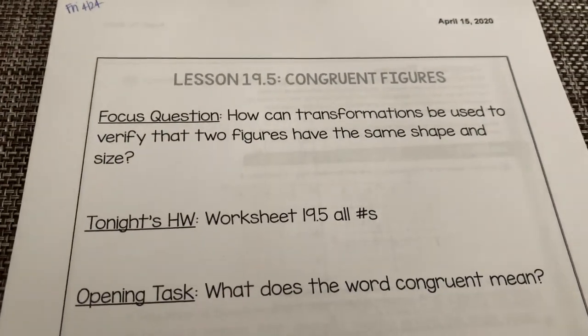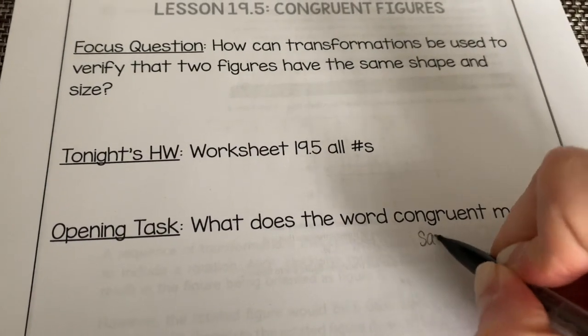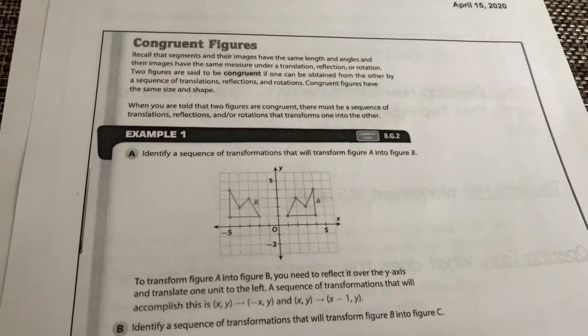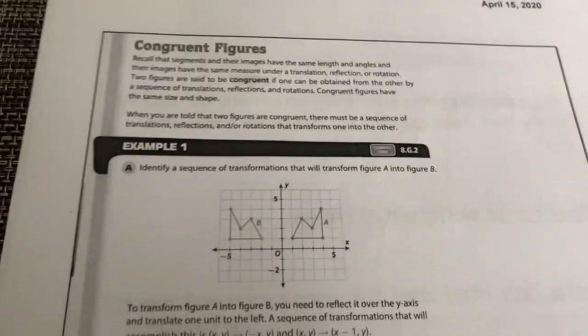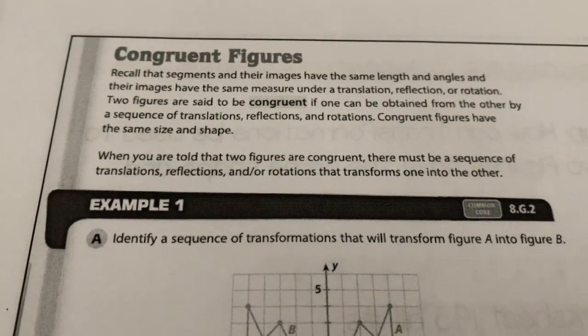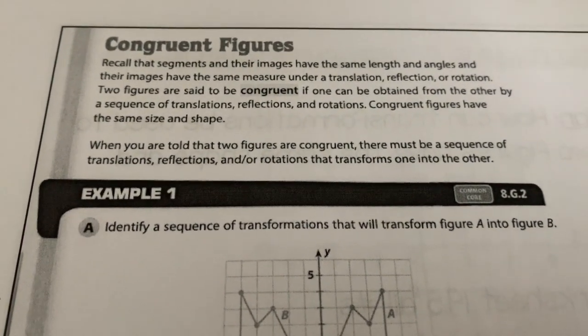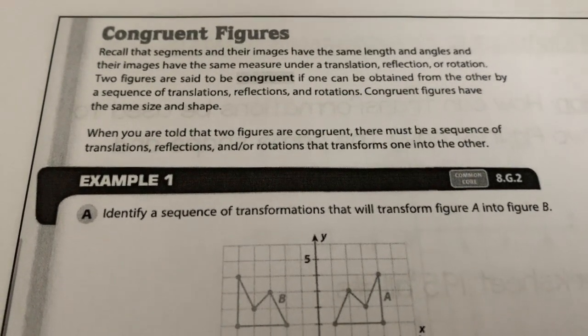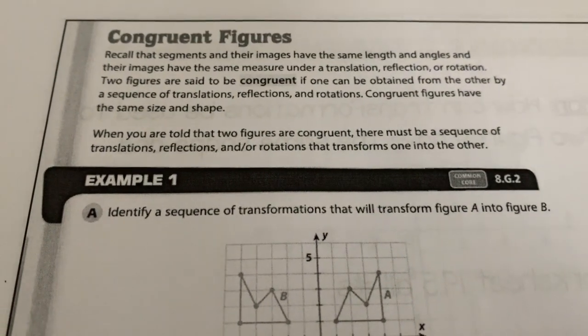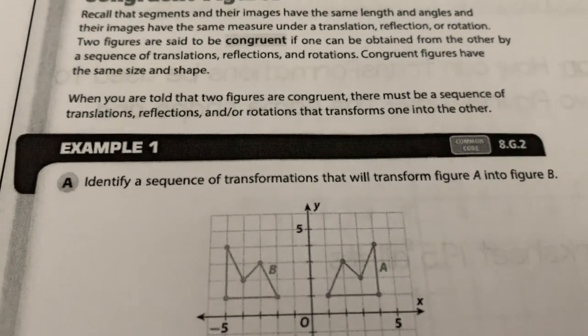Okay, so thinking about in the past where we've used that word congruent, what it means is basically the same or equal. And when it comes to a shape, congruent shapes have the same size and the same shape. So just to quickly review, segments and their images have the same length and angles and their images have the same measure under a translation, reflection, or a rotation. So two figures are said to be congruent if one of them can be obtained from the other by sequence of translations, reflections, or rotations because congruent figures have the same size and shape.